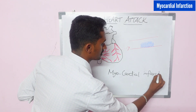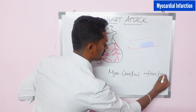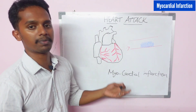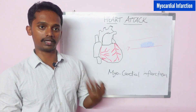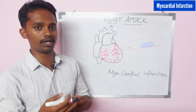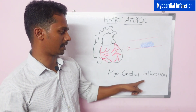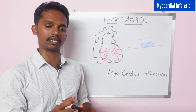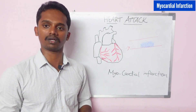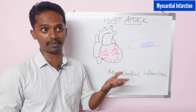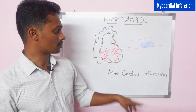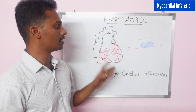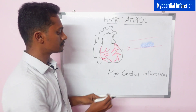Let's look at the spelling of infarction. Some people, when they are learning it, make a mistake writing it. The correct spelling is I-N-F-A-R-C-T-I-O-N — infarction. That is the name: myocardial infarction.